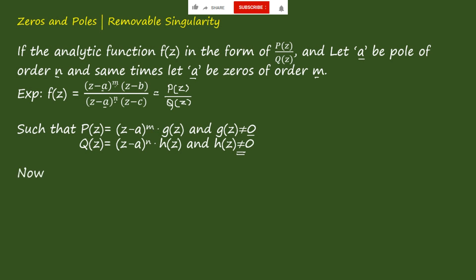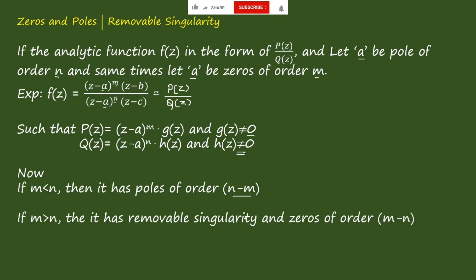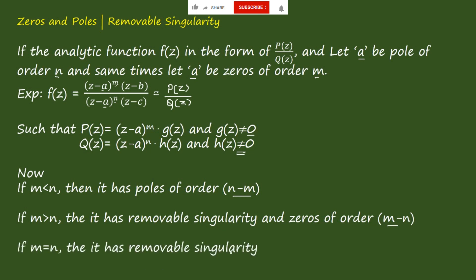Now, if m < n, then it is a pole of order (n − m). If m > n, then the poles cancel out — it becomes a removable singularity and a zero of order (m − n). When m = n, the numerator and denominator cancel completely, giving a removable singularity where a is neither a pole nor a zero.